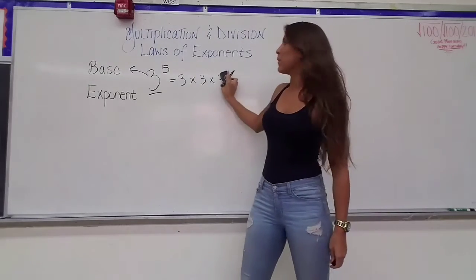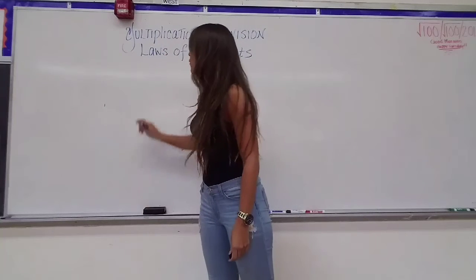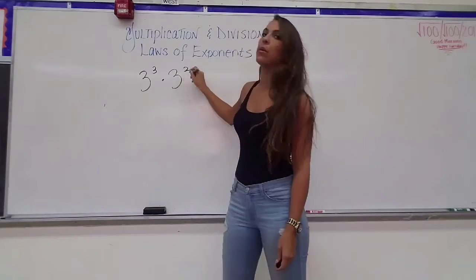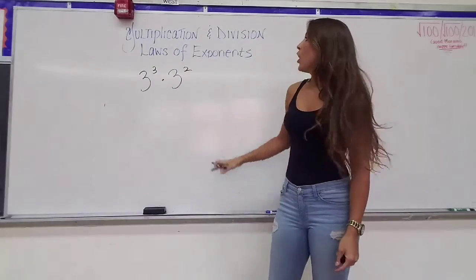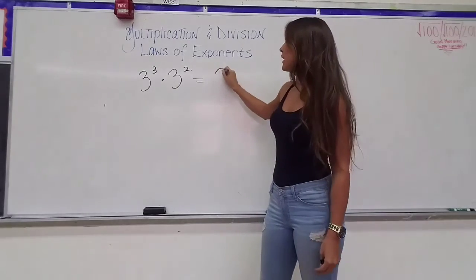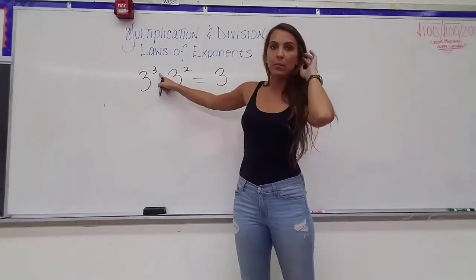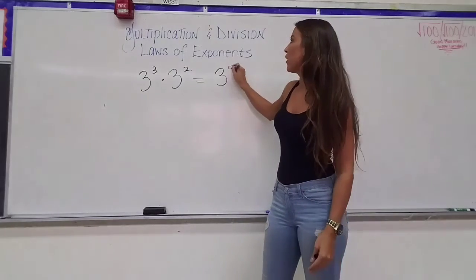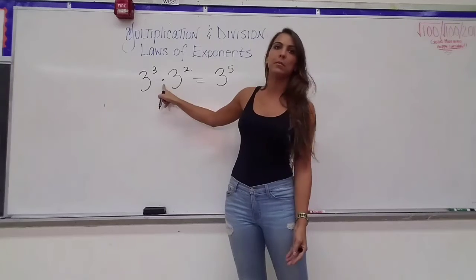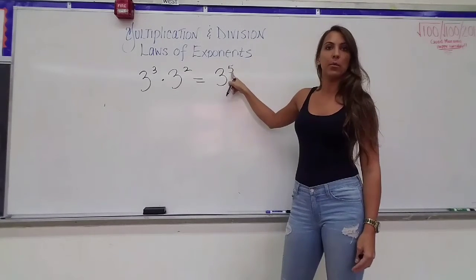When you're multiplying expressions that have the same base — for example, 3 to the 3rd power multiplied by 3 to the 2nd power — the rule states that if they have the same base, we keep that base and add the exponents: 3 plus 2 to get 5. So by the multiplication law of exponents, if you've got multiplication and the same bases, you keep that base and add your exponents.